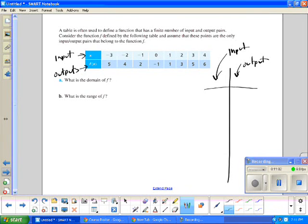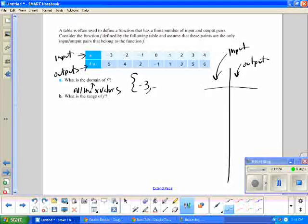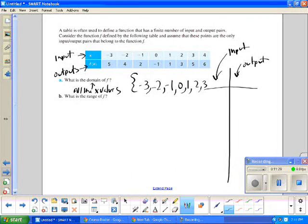They're asking us for the domain of F, and that represents this function. The domain refers to all the X values. We're going to express that as a set of numbers. We're going to use these curly brackets. The domain here is negative 3, negative 2, negative 1, 0, 1, 2, 3, and 4. This is how you express a set of numbers.